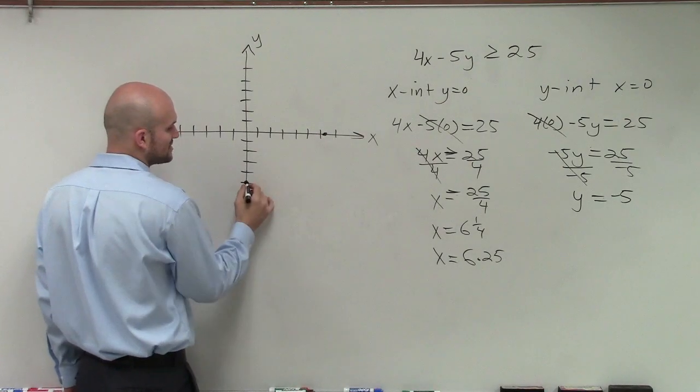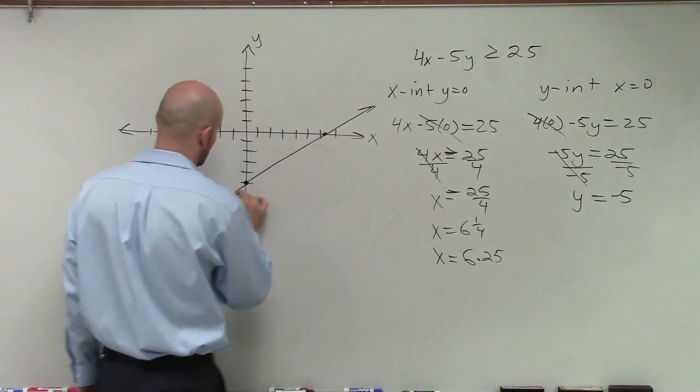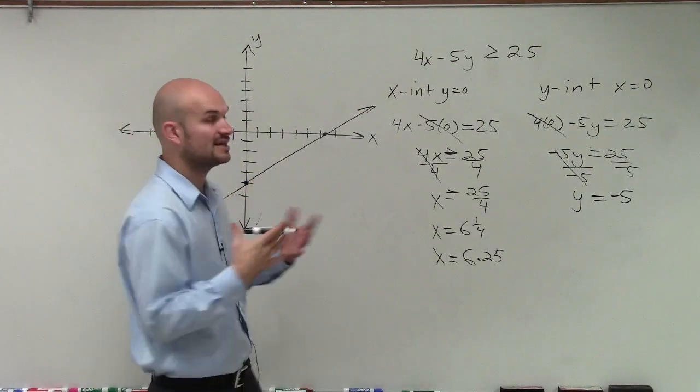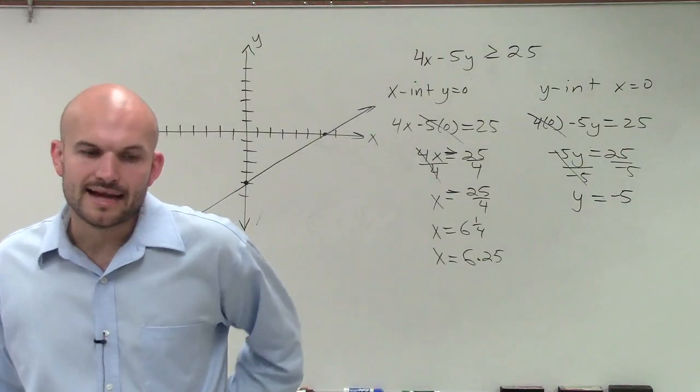So therefore, those are my two intercepts. So therefore, I know that my graph is going to go infinitely to the left and infinitely to the right, and it's going to connect those two points.